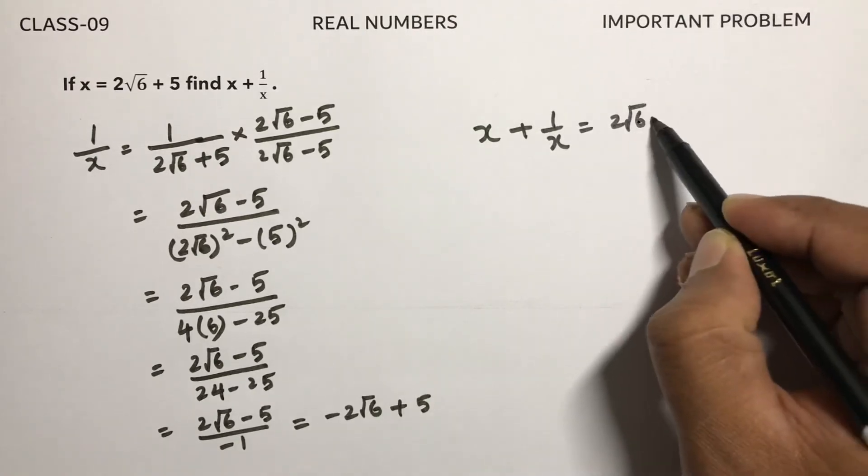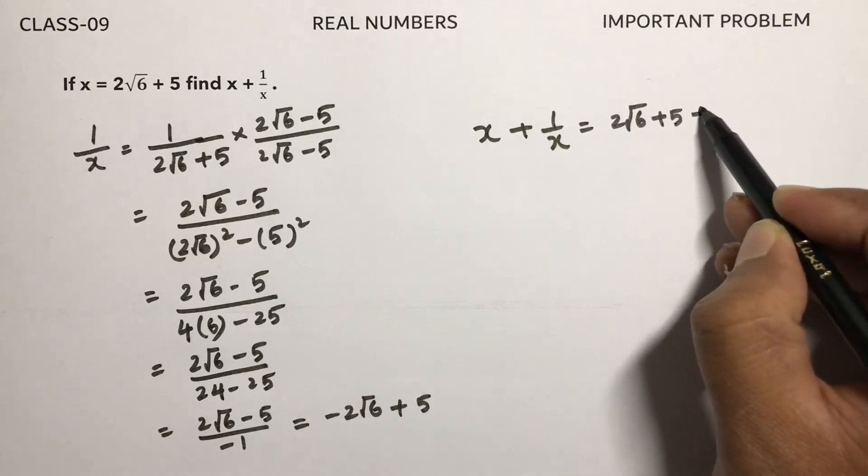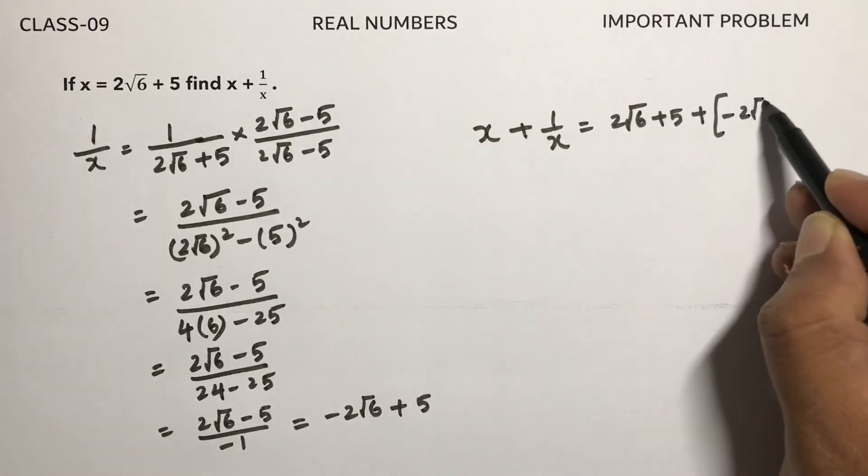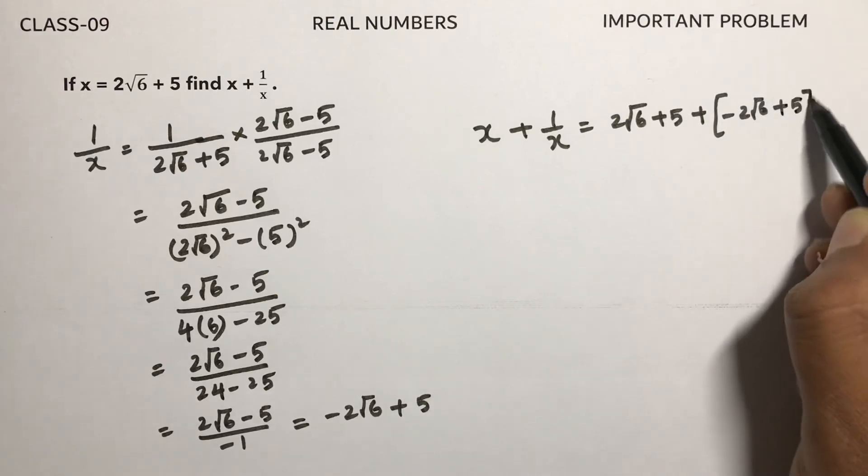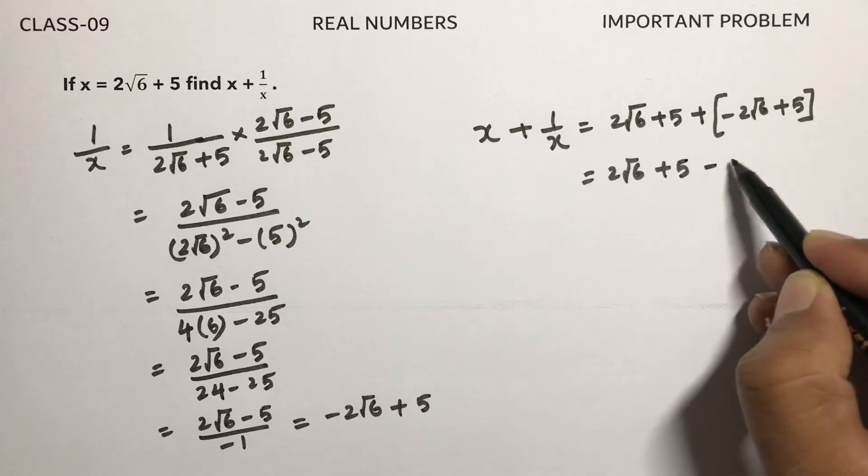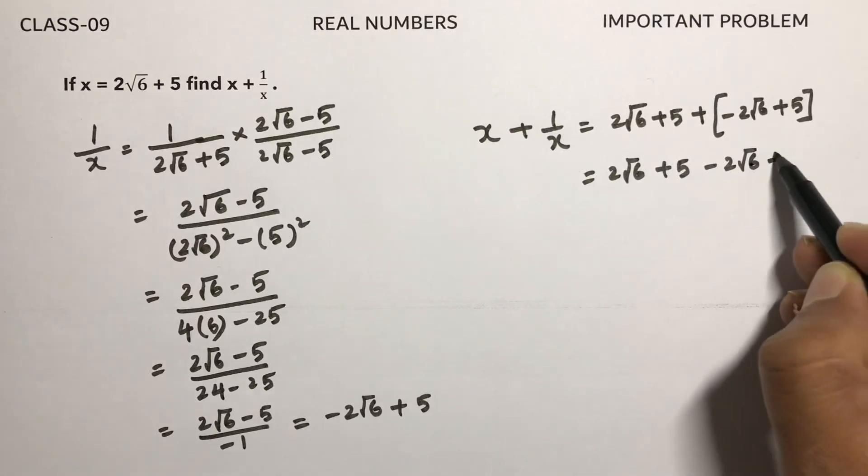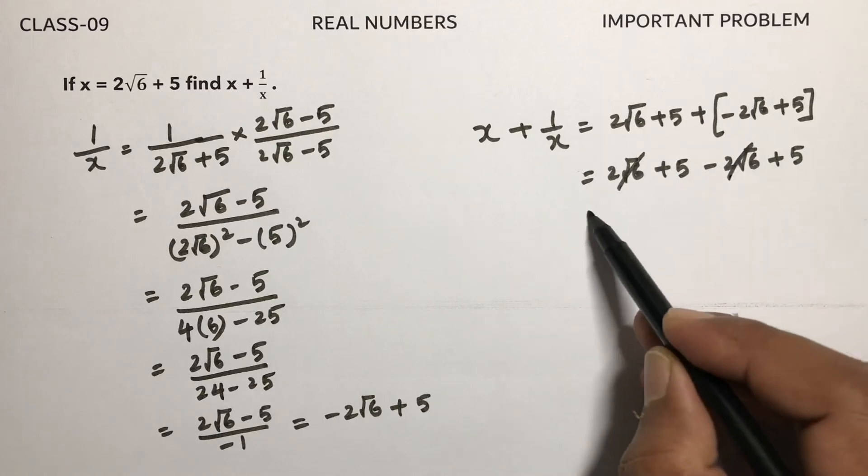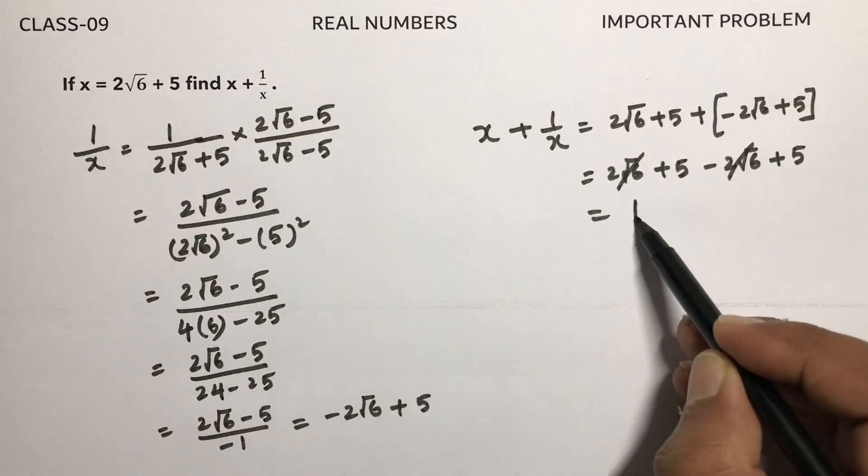So the value of x is 2 root 6 plus 5, plus 1 by x. 1 by x value is minus 2 root 6 plus 5. So 2 root 6 plus 5 minus 2 root 6 plus 5. 2 root 6 and 2 root 6 will get cancelled, 5 plus 5 is 10.